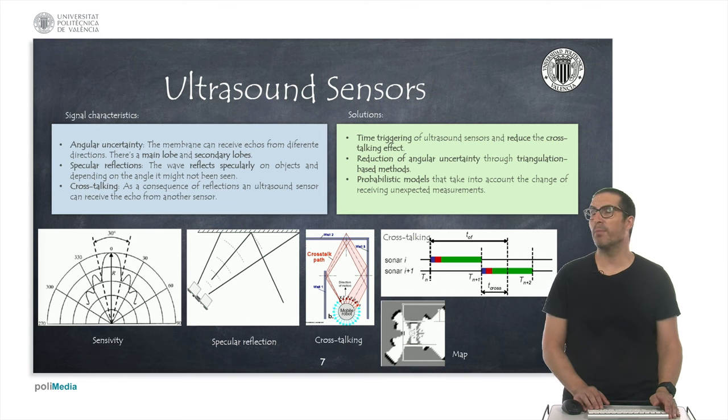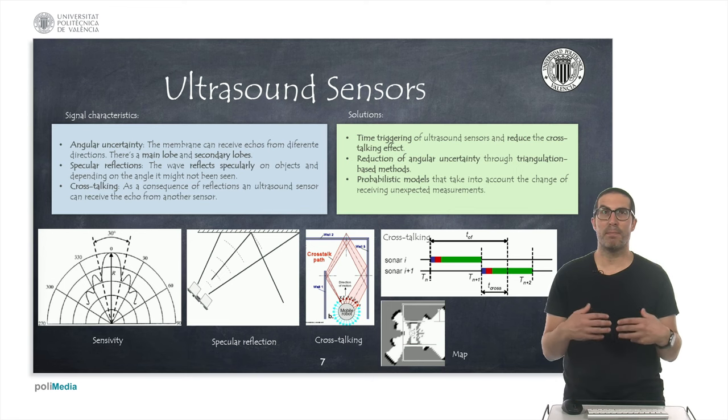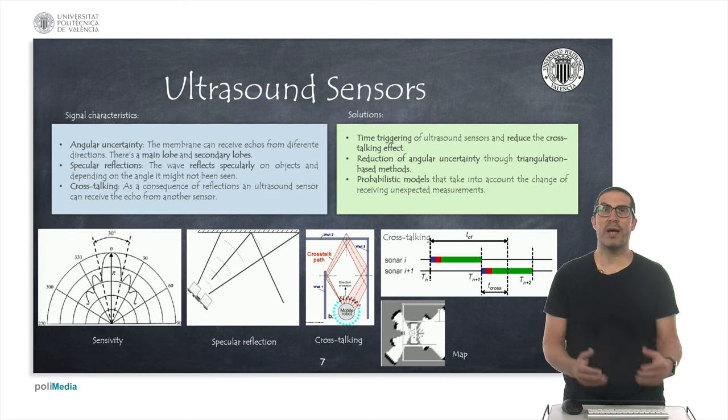From several measurements we can infer where's the position of the object more accurately. And also of course we can include or consider probabilistic models that might take into account all these problems that these sensors have in order to provide a probability for those kind of unexpected measurements.